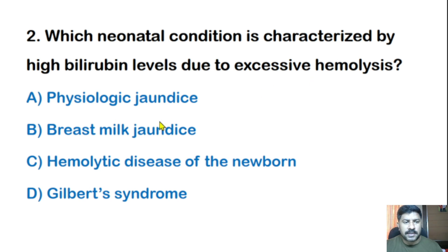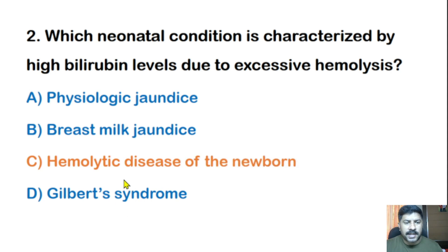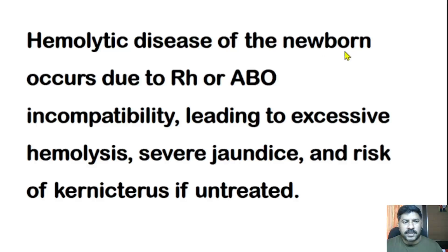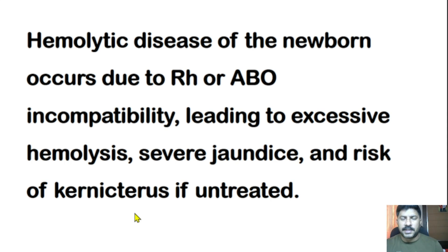Second question: Which neonatal condition is characterized by high bilirubin levels due to excessive hemolysis? Options: physiological jaundice, breast milk jaundice, hemolytic disease of the newborn, or Gilbert's syndrome. The correct answer is hemolytic disease of the newborn. It occurs due to Rh or ABO incompatibility, leading to excessive hemolysis, severe jaundice, and risk for kernicterus if untreated. Kernicterus occurs after bilirubin reaches above 20 mg/dL and affects the brain.